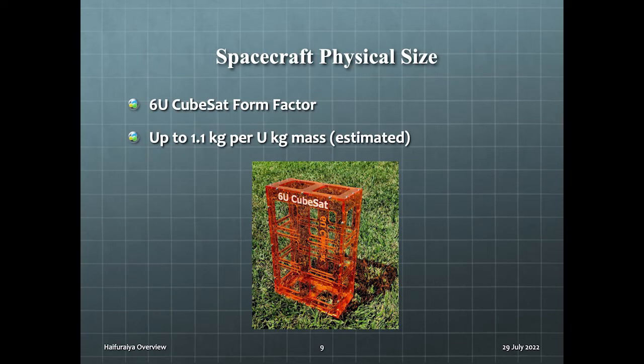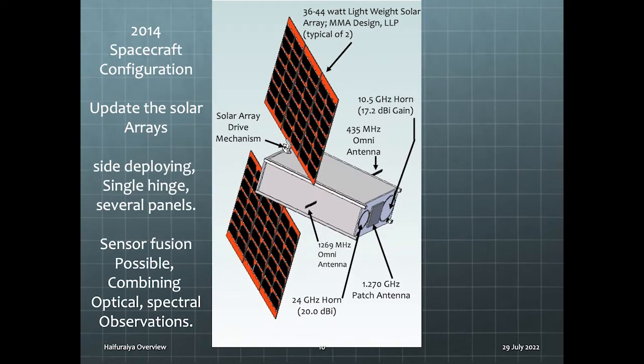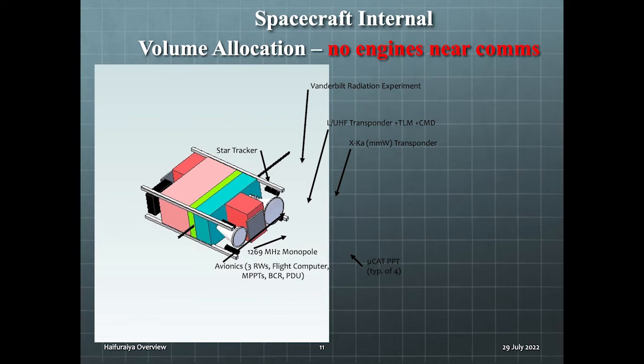The payload is at least a 6U spacecraft, or six units. This is the 2014 physical configuration. There are some things that will change, such as the solar panel deployment style, and there will be a lot of sensor fusion and less mass, and we will move things around to where the engines are not right by the antennas. The spacecraft internal volume allocation is most likely going to change. We really want to get the engines as far away from the antennas as we can.